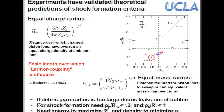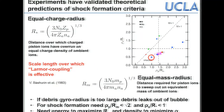Bashurin found that the debris ions must have a Larmor radius not much larger than the equal-mass radius — otherwise they leak out of the bubble and won't couple. In this plot, the ratio of the piston or debris Larmor radius over the equal-mass radius is plotted. To couple, you need to be to the left of roughly unity. In the laboratory we can use gases other than hydrogen (which dominates in space), but changing to heavier gases like neon or argon reduces the Alfvénic Mach number.